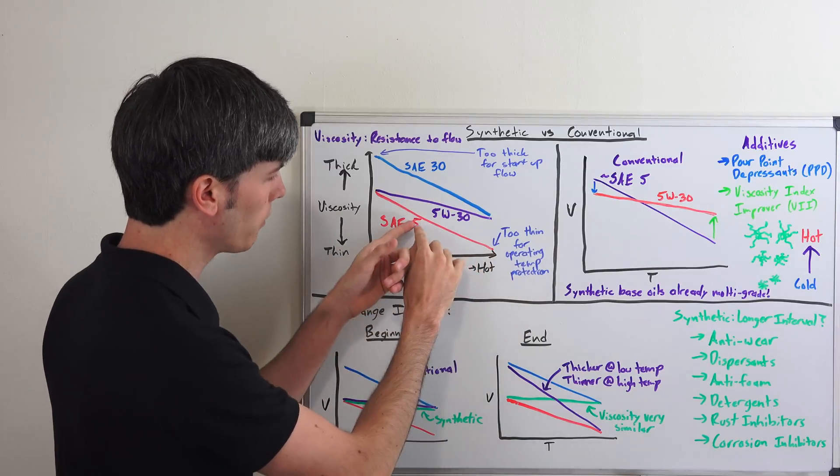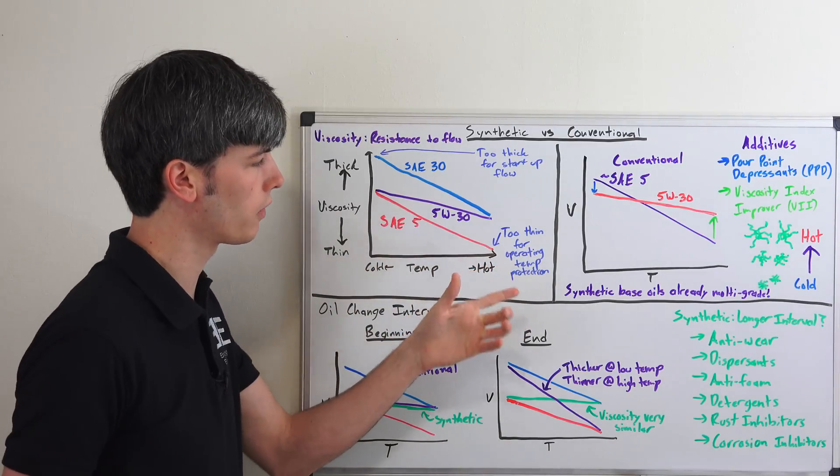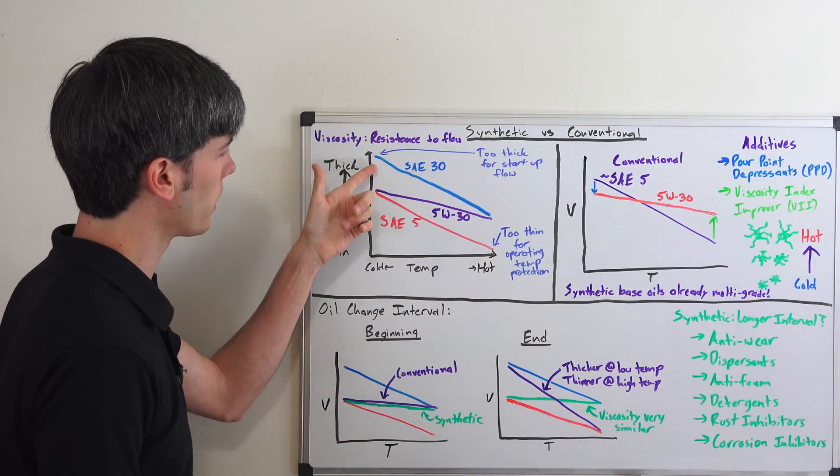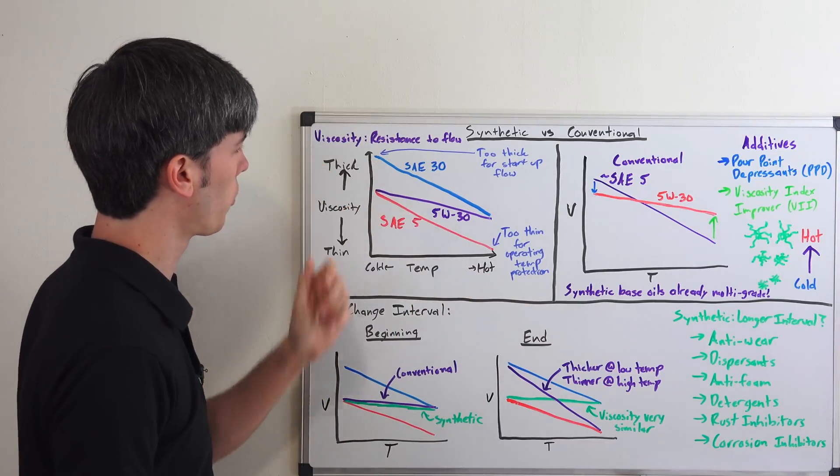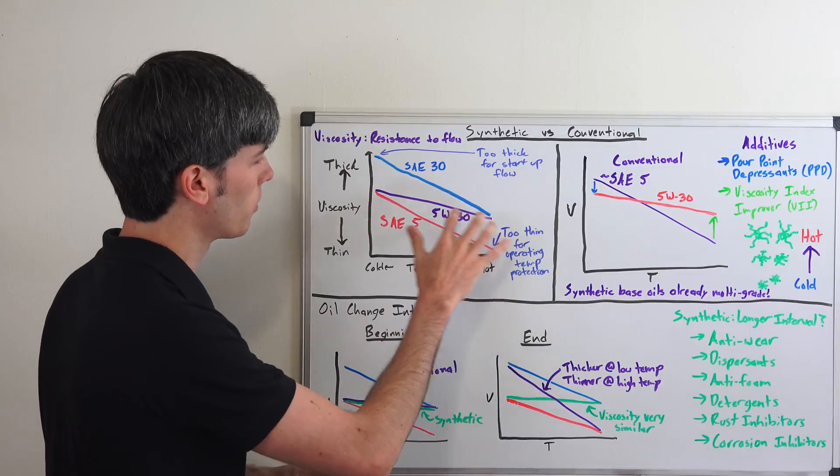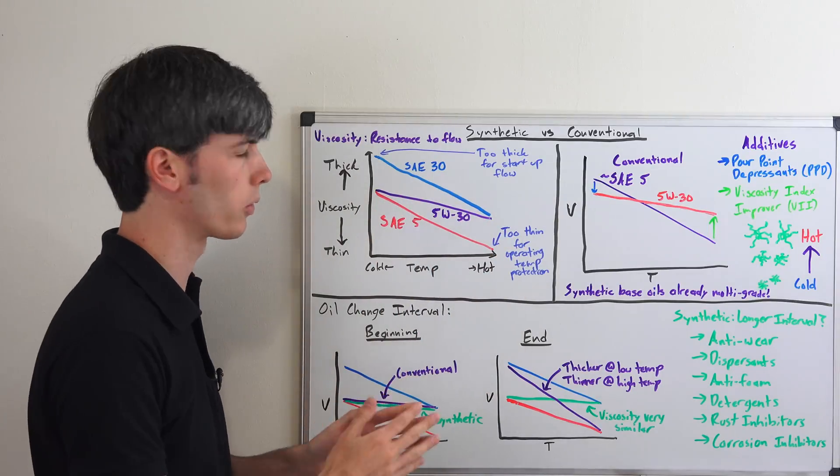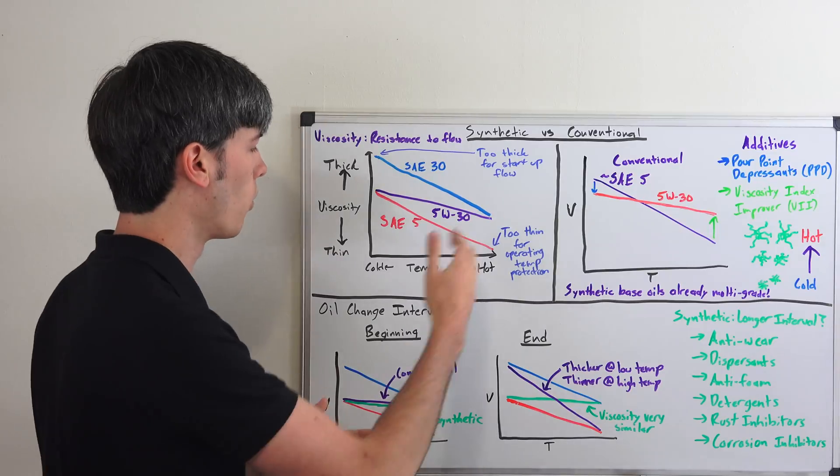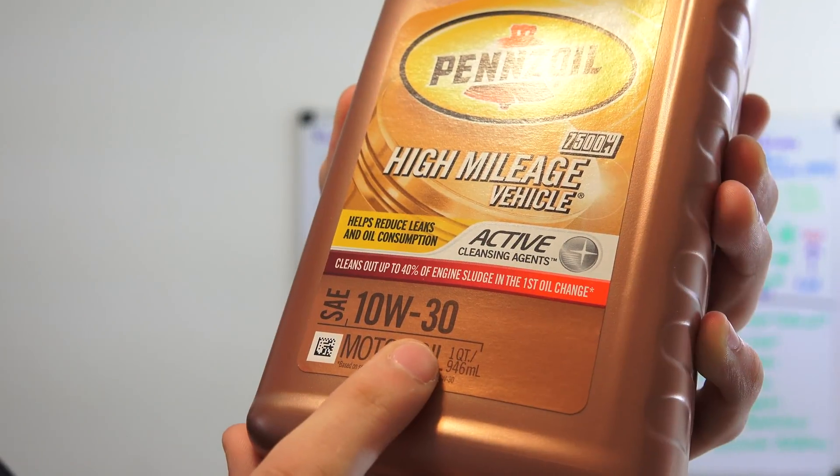And so here if it were to just be a 5 it'd be too thin for operating temperature to protect the engine but if it were to operate like an SAE 30 it'd be too thick for startup. And so you have these multi-grade characteristics so you can kind of have the best of both worlds. You can start it up without any issues and you can have plenty of protection once it's at operating temperature.